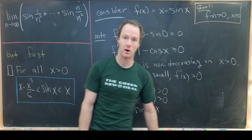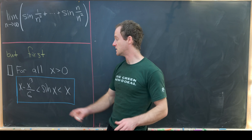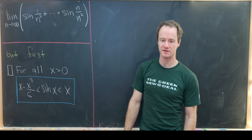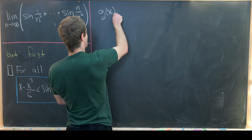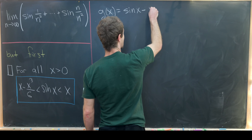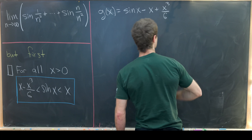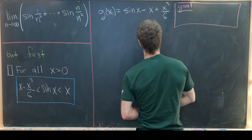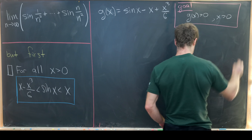We've proved half of our goal inequality. Now let's look at the other side: sine of x is bigger than x minus x cubed over 6. We'll prove this in a similar way by defining a new function g of x equal to sine of x minus x plus x cubed over 6. Our goal will again be to show that g of x is bigger than 0 when x is bigger than 0, which implies sine of x is bigger than this cubic polynomial.